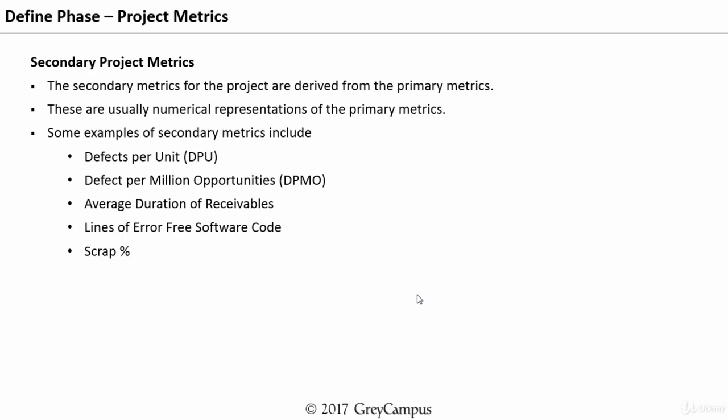The secondary metrics are normally the numerical representations of the primary metrics. That means, if quality is identified as a primary metric, then how can quality be measured in terms of numbers, so that we will be able to identify what is the current baseline and what is the target we want to achieve. Some examples of secondary metrics include defects per unit (DPU), defects per million opportunities (DPMO), average duration of deliverables, lines of error-free software code, and scrap percentage. Once you have a primary metric like quality, you can define the secondary metrics as DPU, DPO, or scrap percentage. If you are talking about schedule, then cycle time can be defined as a key secondary project metric.